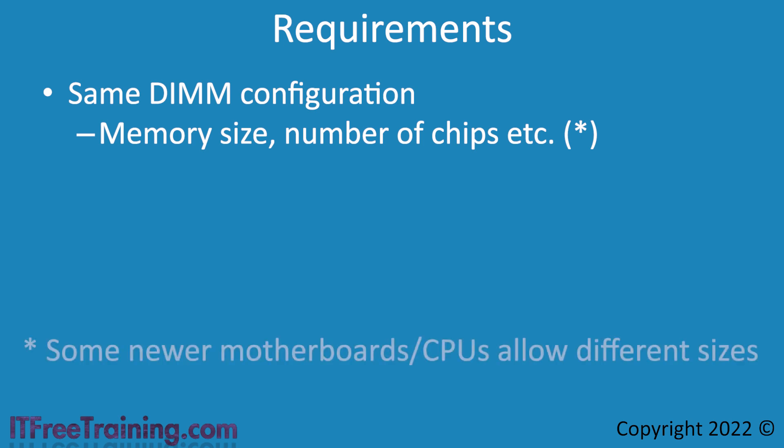Having said all this, some of the newer motherboards and CPUs will allow differently sized memory to be configured using multi-channel. They achieve this by mapping the matching memory amount to the multi-channel. Any extra memory would be mapped to its own channel, meaning you could get a speed improvement for the lower memory amount that is mapped directly to another memory module, and no speed increase for the memory that cannot be mapped.